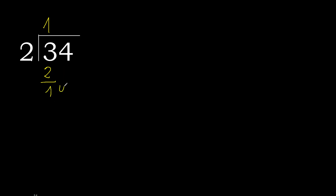Next: 14. 2 multiplied by 7 is 14 — exact, not greater. 14 minus 14 equals 0.